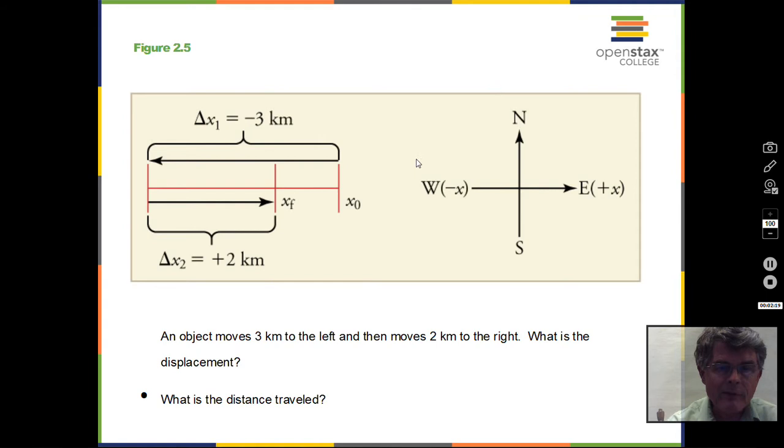So we have an example here that an object starts at x naught here, this position, moves 3 kilometers to the left. The direction of motion can be represented by a plus or minus sign, so we have minus 3 kilometers. And then the object moves 2 kilometers to the right, plus 2 kilometers. So what do you think the displacement is? Displacement is how far we are away from the start at the final position, xf minus x naught, and you should come up with minus 1 kilometer.